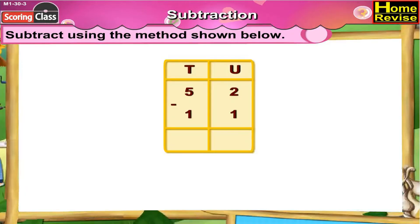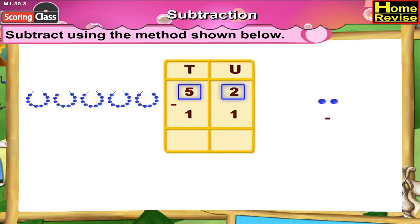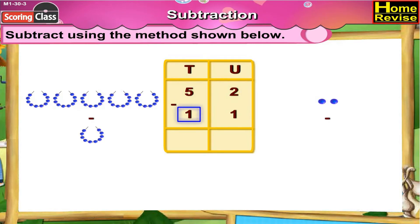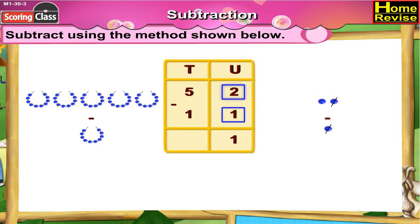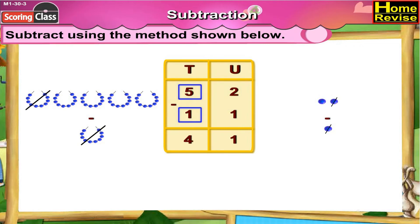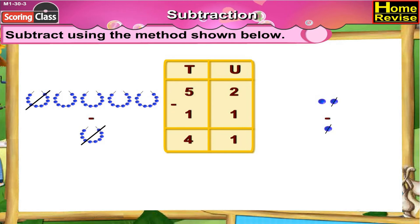52 minus 11. If you arrange them under tens and units, it is 5 tens 2 units minus 1 ten 1 unit. Now under the units column, 2 minus 1 is 1. Under the tens column, 5 minus 1 is 4. So the answer is 4 tens 1 unit. 52 minus 11 is 41.